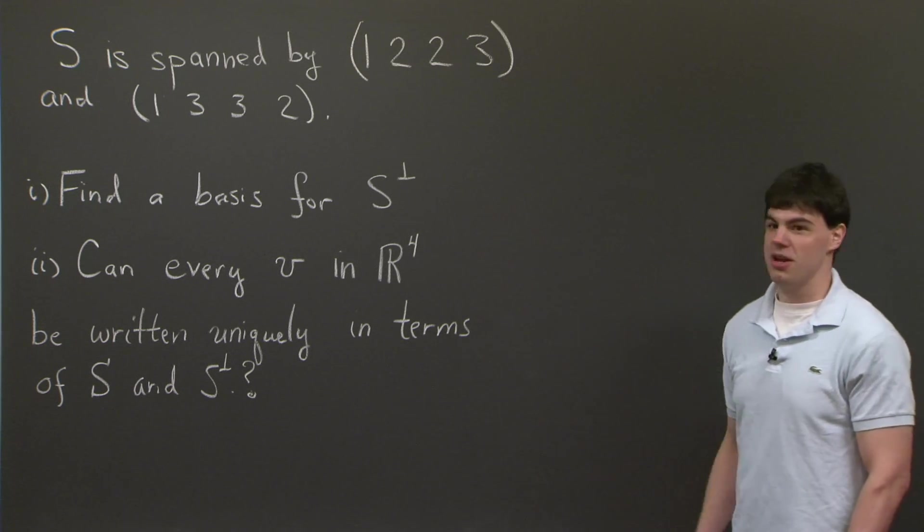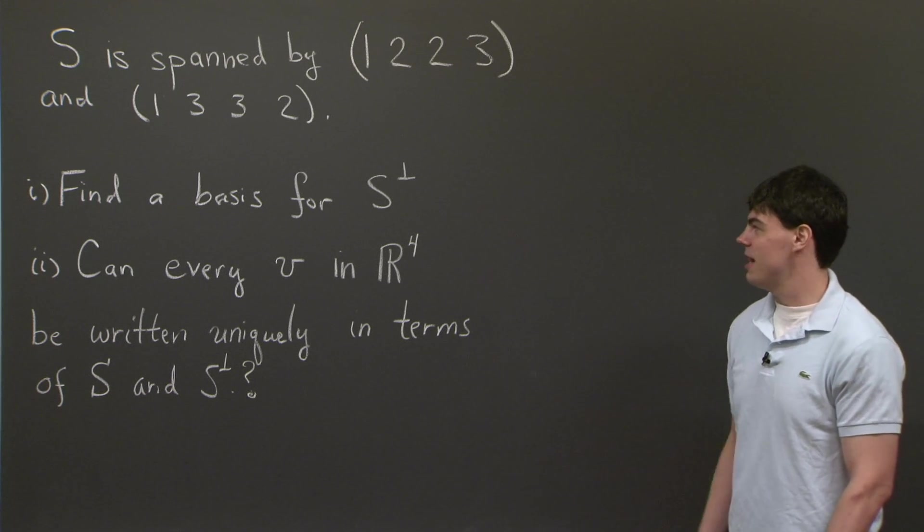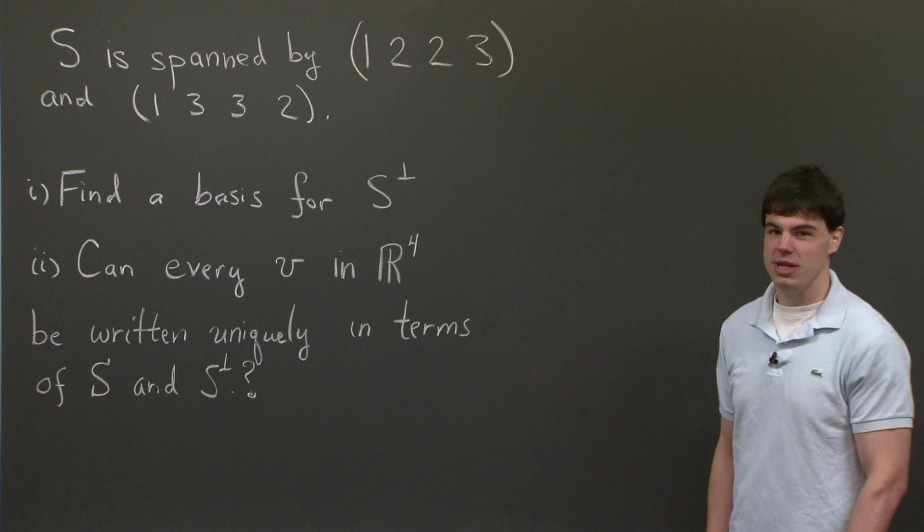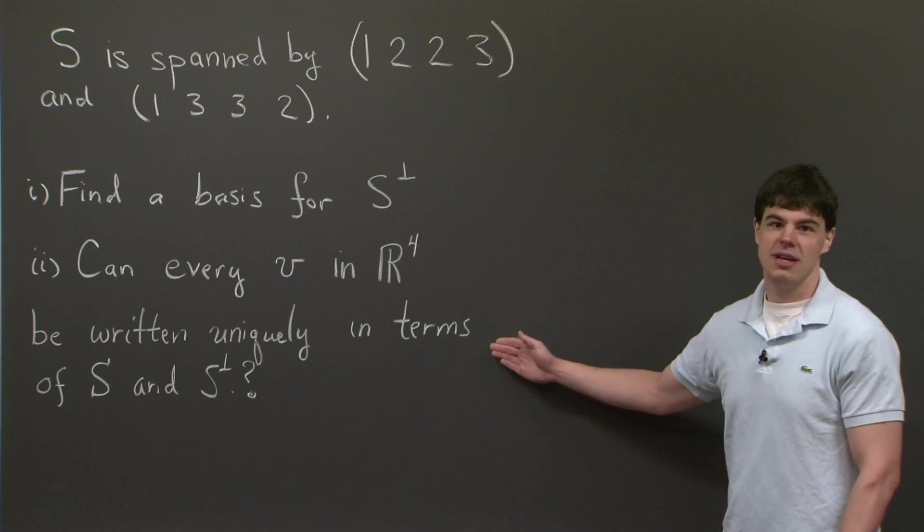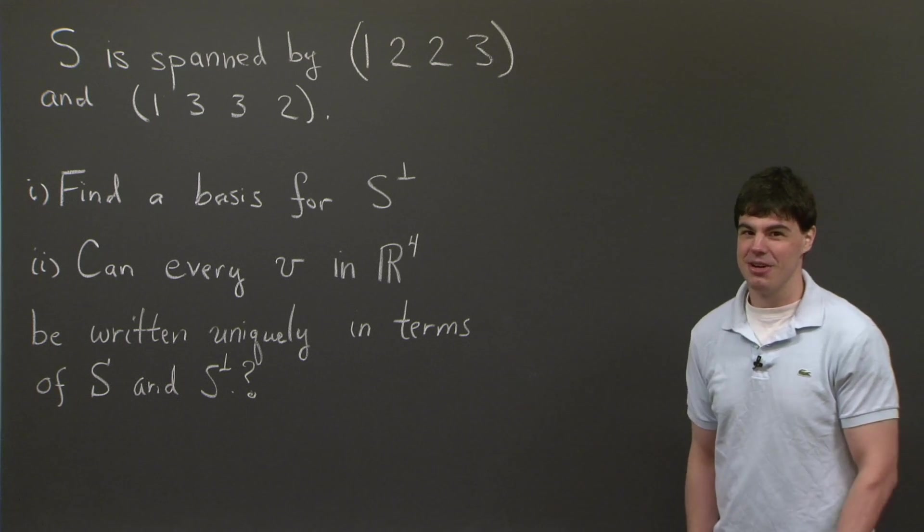S perp is another subspace, which is orthogonal to S. And then secondly, can every vector in R4 be uniquely written in terms of S and S perp? So I'll let you think about this for now, and I'll come back in a minute.